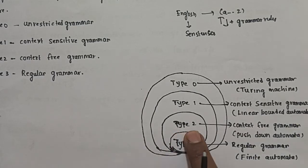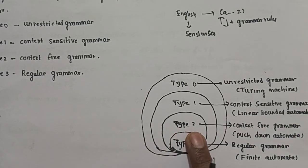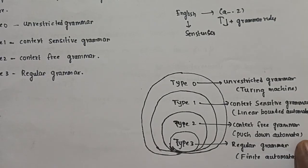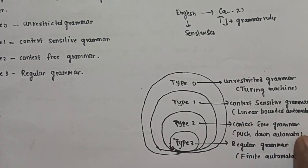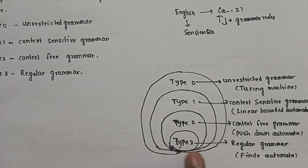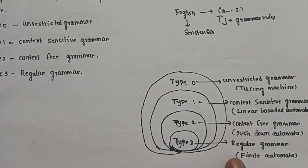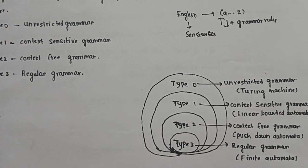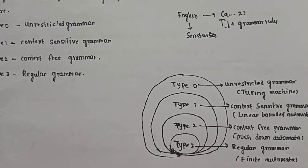Next is type 2, accepted by the pushdown automata machine — this is context-free grammar. Then type 3, which is regular grammar, accepted by the finite state automata.